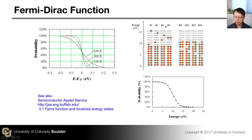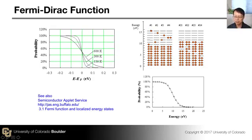At energy equals E_F, your probability of finding an electron is always one half. You can do your own exercise here. Suppose you have a certain energy level distribution and calculate the possible configurations of electrons according to Pauli's exclusion principle — no more than two electrons at any energy level. You can find all possible configurations, calculate their energy, plot it, and you will find that it follows the Fermi-Dirac distribution function very nicely.